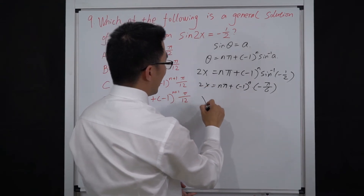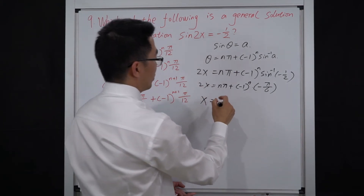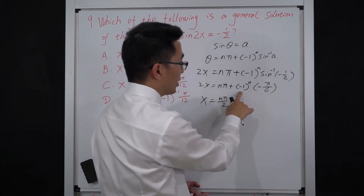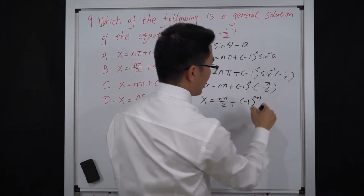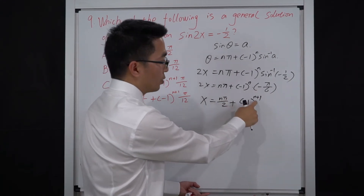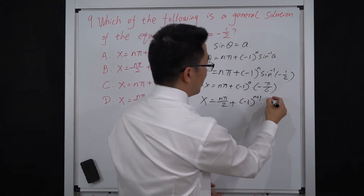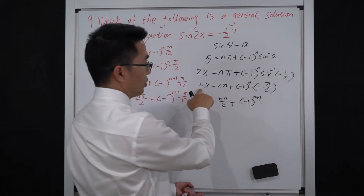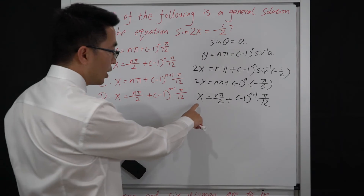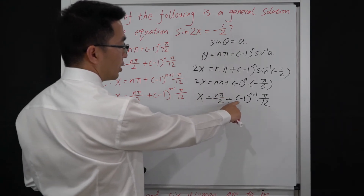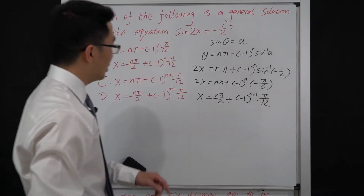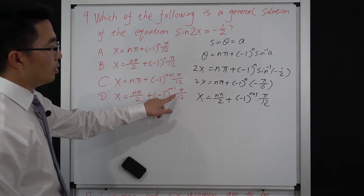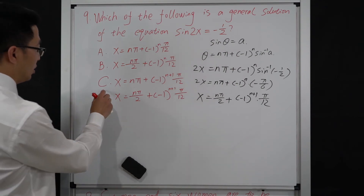Then 2x equals nπ plus (−1)ⁿ times (−π/6). Dividing both sides by 2, x equals nπ/2 plus (−1)ⁿ⁺¹ times π/12, where we combine the negative sign into the exponent to get n+1. Matching this against the answer options, the final answer is D: x equals nπ/2 plus (−1)ⁿ⁺¹ times π/12.